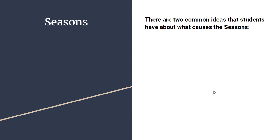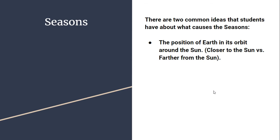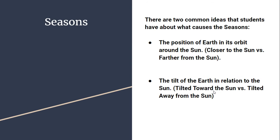As we've been presenting the idea of seasons and I asked students what causes them, there were two common ideas put forward. The first is that it relates to the position or proximity of Earth in its orbit around the Sun — being closer to the Sun causing one season and being farther away causing the other. The second idea was the tilt of the Earth in relation to the Sun: when it's tilted towards the Sun it's one season, and when it's tilted away it's another.